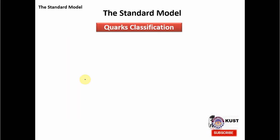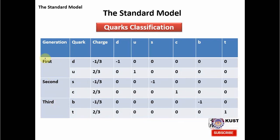A similar classification can be made for the quarks, where we have 1st, 2nd, and 3rd generations. In the 1st generation there are 2 quarks — down and up — the lightest quarks with fractional charges. The table shows their downness, upness, strangeness, charmness, bottomness, and topness values. In the 2nd generation we have strange and charm quarks, and in the 3rd generation we have the bottom and top quarks. In the Standard Model of particle physics, we have a total of 62 fundamental elementary particles, and both leptons and quarks are classified into 3 generations.